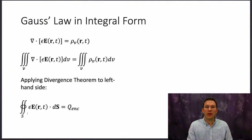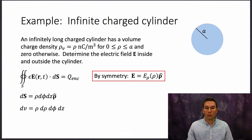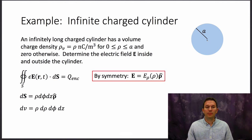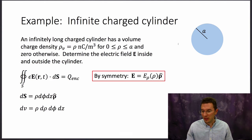Let's see how we can take advantage of this to solve problems with a high degree of symmetry. Here's the example: an infinite charged cylinder. The cylinder has a charge density rho_v equal to rho nanocoulombs per meter cubed inside the cylinder, so the volume charge density increases linearly with rho for rho less than a. It's zero outside the cylinder — there's no charge outside. The coordinate system we need here is clearly cylindrical coordinates.